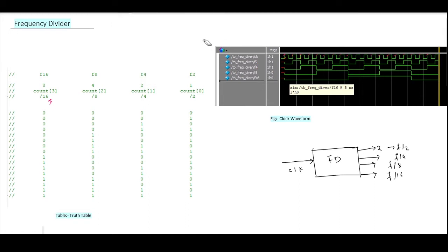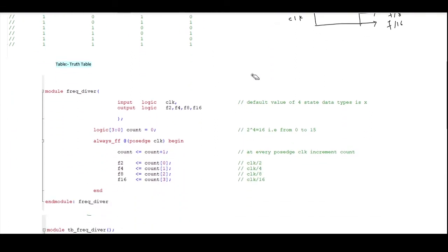Now we will see the HDL code for this. I have written this code in SystemVerilog HDL, and you can also write this code using Verilog HDL — that's homework for you so you can get some confidence writing this code. It is very simple. Inside the module, the logic is written. I have declared a clock as the input logic, and four outputs: f2, f4, f8, and f16. I have also taken a count variable.